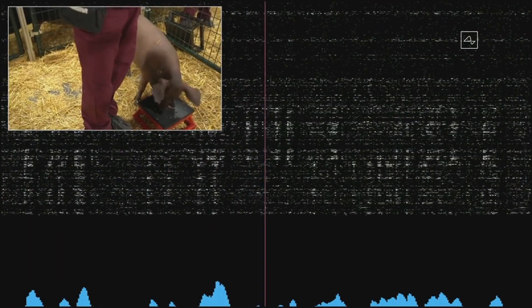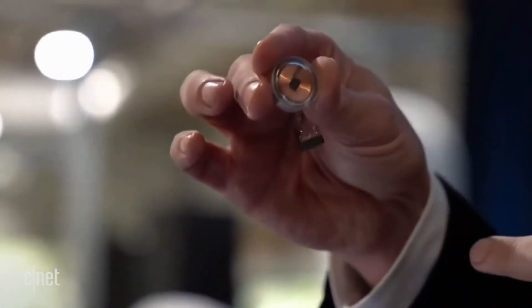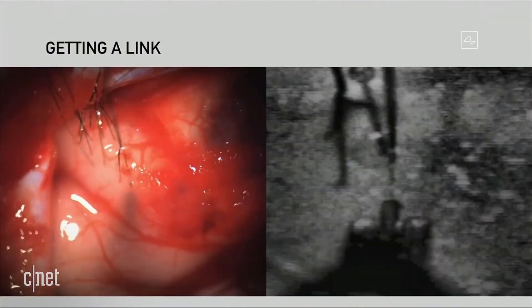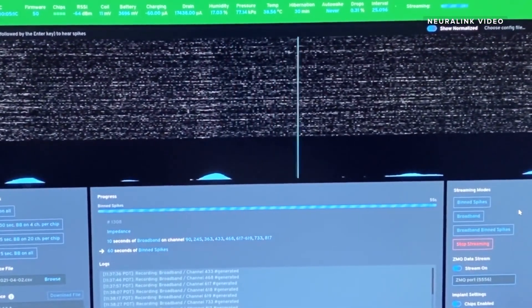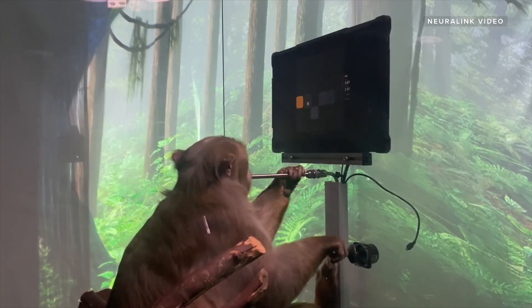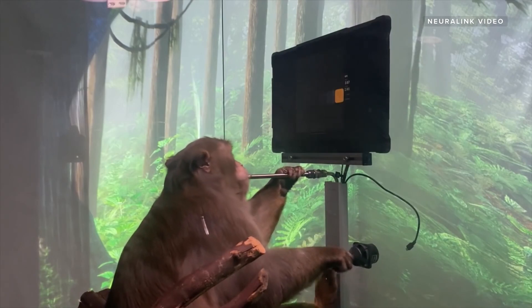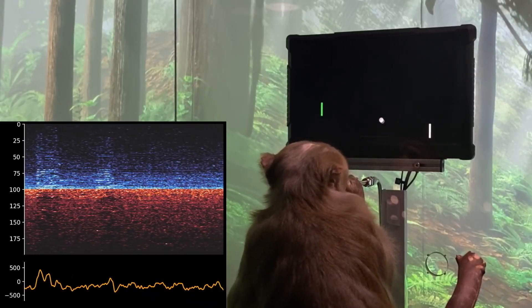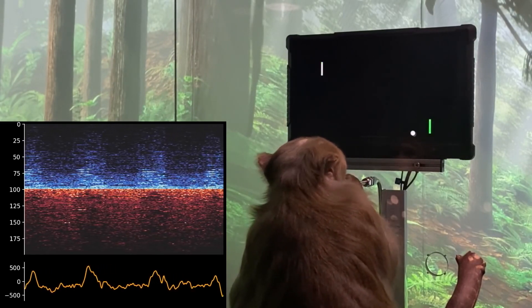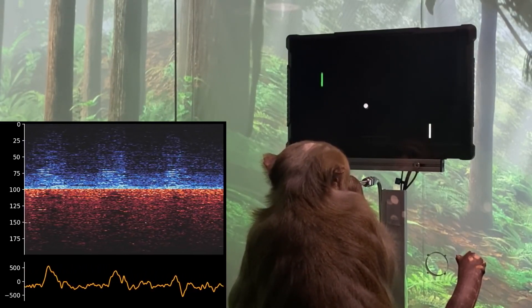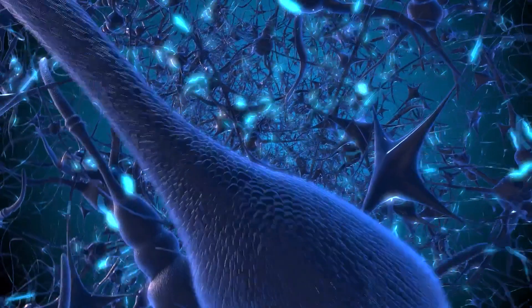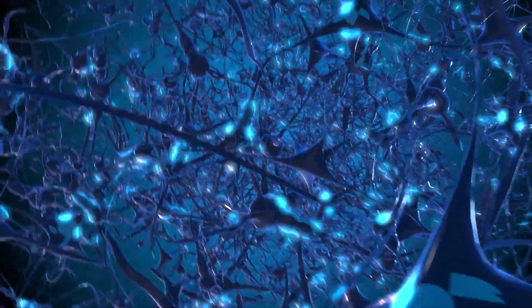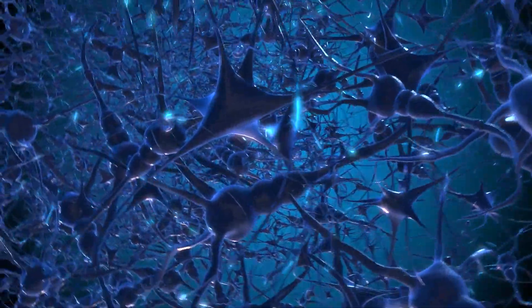The science behind Neuralink's brain chip involves the use of microelectrodes, which are tiny electrodes that are implanted into the brain to measure the electrical activity of individual neurons. The electrodes pick up the signals produced by neurons and transmit them to an external device, which decodes the signals and translates them into actions. One of the key challenges in developing a successful BCI is finding a way to simultaneously record the activity of many neurons. Neuralink's approach involves using ultra-thin electrodes, which are less invasive than traditional electrodes and can record the activity of many neurons at once.